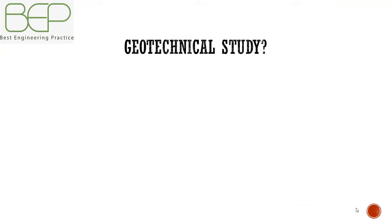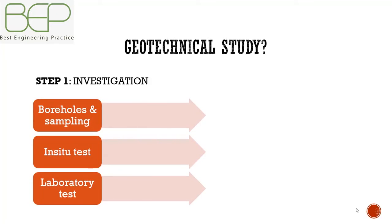The geotechnical study can be divided into two main steps. The first step is investigation. During the investigation, we do boreholes and sampling, in-situ tests, and laboratory tests. All those elements permit us to find the features and characteristics of the soil on which the structure will be built.